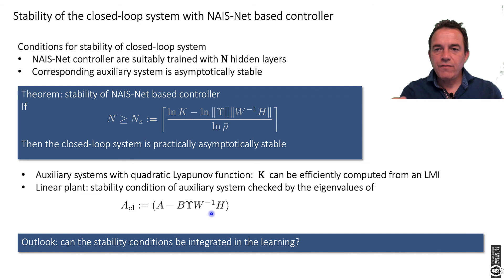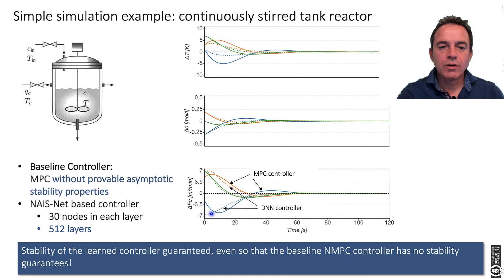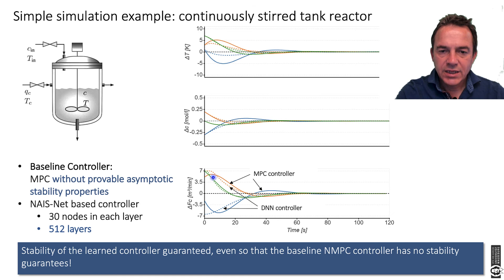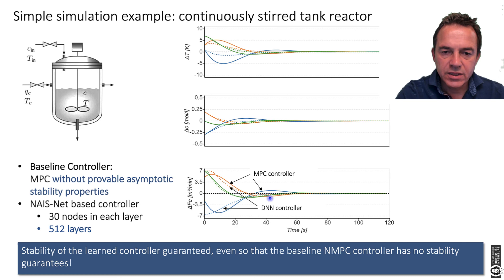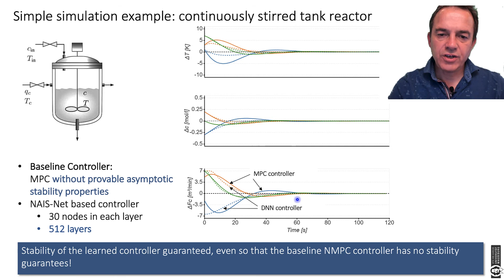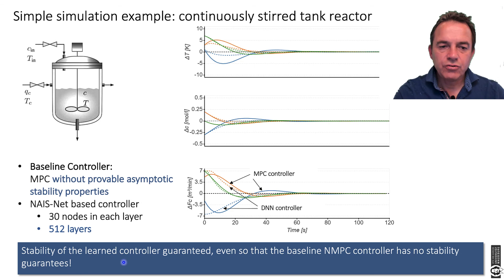This gives us a possibility to validate a deep neural network in closed loop and check for stability. As an example, again a chemical reactor with concentration and temperature: the red and blue lines are the NMPC reference controller — we don't know if it's stable. The dotted lines are the learned NAES net controllers, which have a specific structure and are provably stable. So the original NMPC controller was not stable, but the learned NAES net controllers are actually stable — even though it is a rather large network.